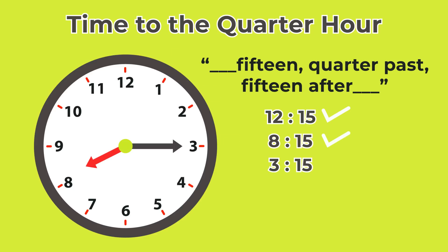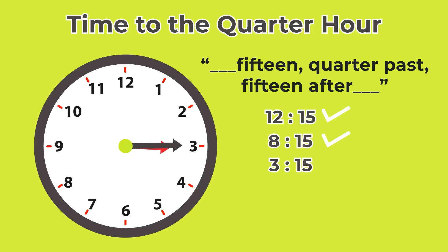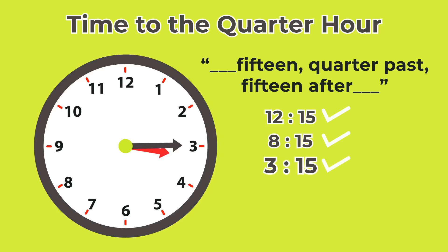Let's do three fifteen. This is three o'clock. We go fifteen minutes after, and the hour hand goes a little bit past the three and the minute hand is right on the fifteen — five, ten, fifteen. This is three fifteen, quarter past three.